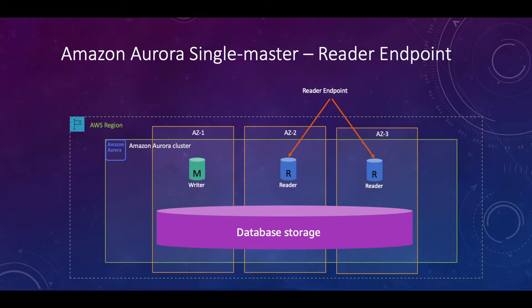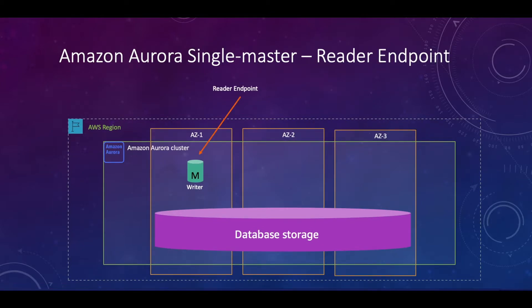In the diagram I'm showing two read replicas, and one endpoint will connect to both of them. Whenever any query or connection comes in, it will load balance between these two read replicas. If you have only one node with no read replicas, your reader endpoint will connect to your master writer node only, so both the cluster endpoint and reader endpoint will be pointing to your writer node.